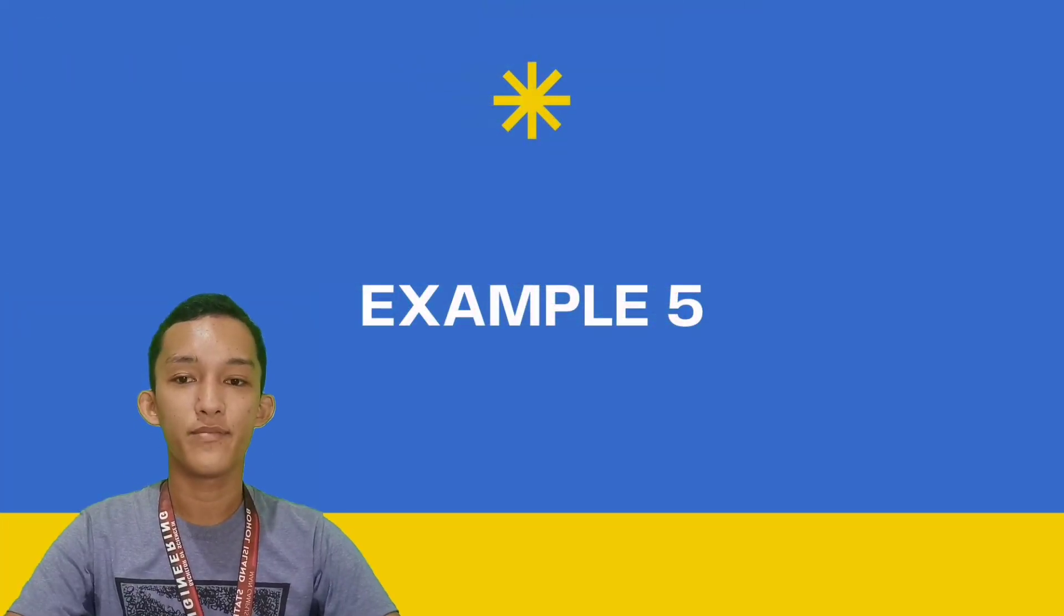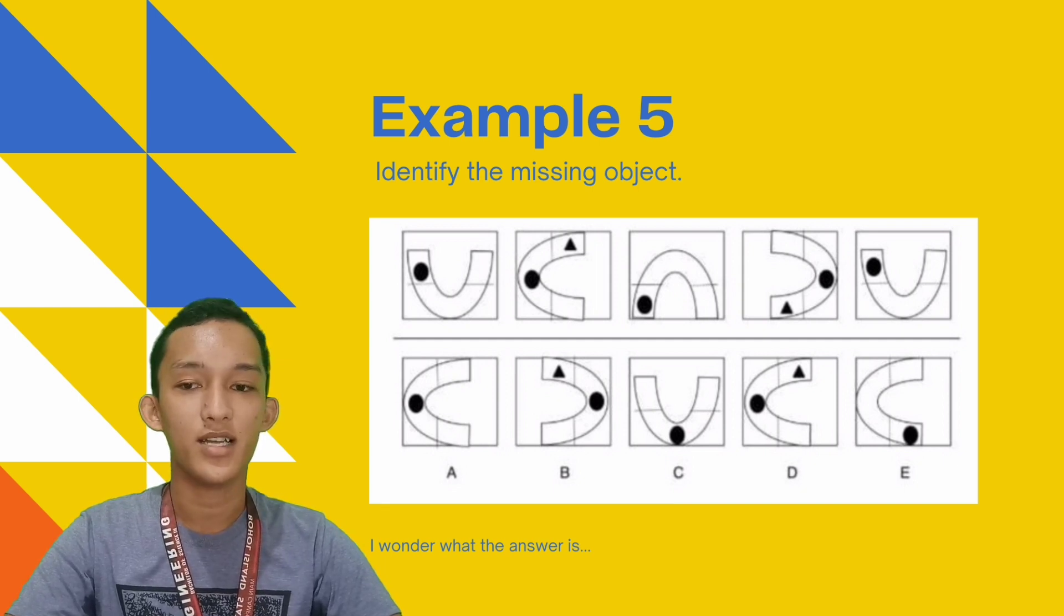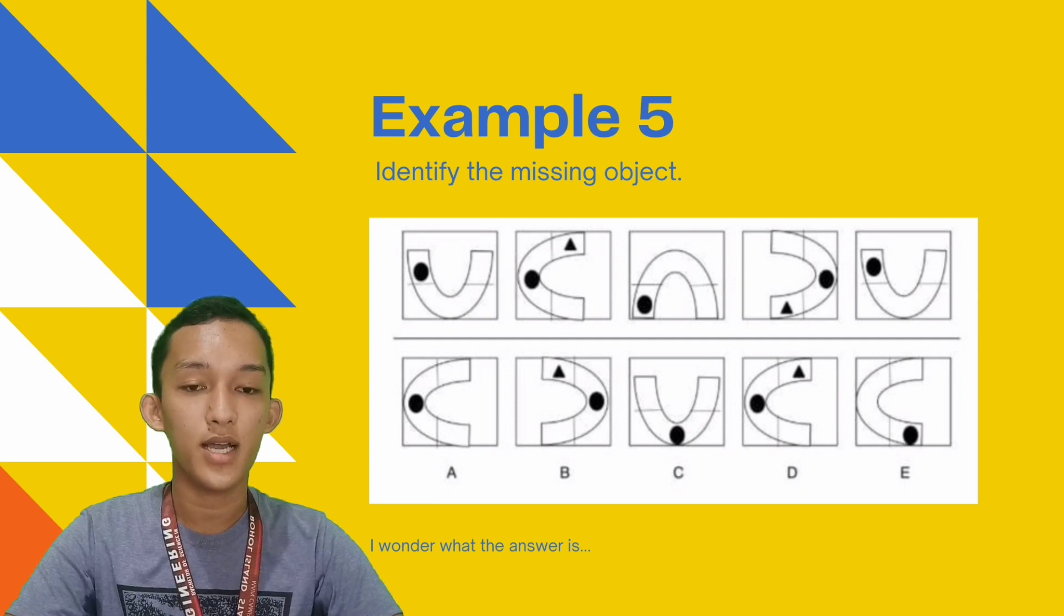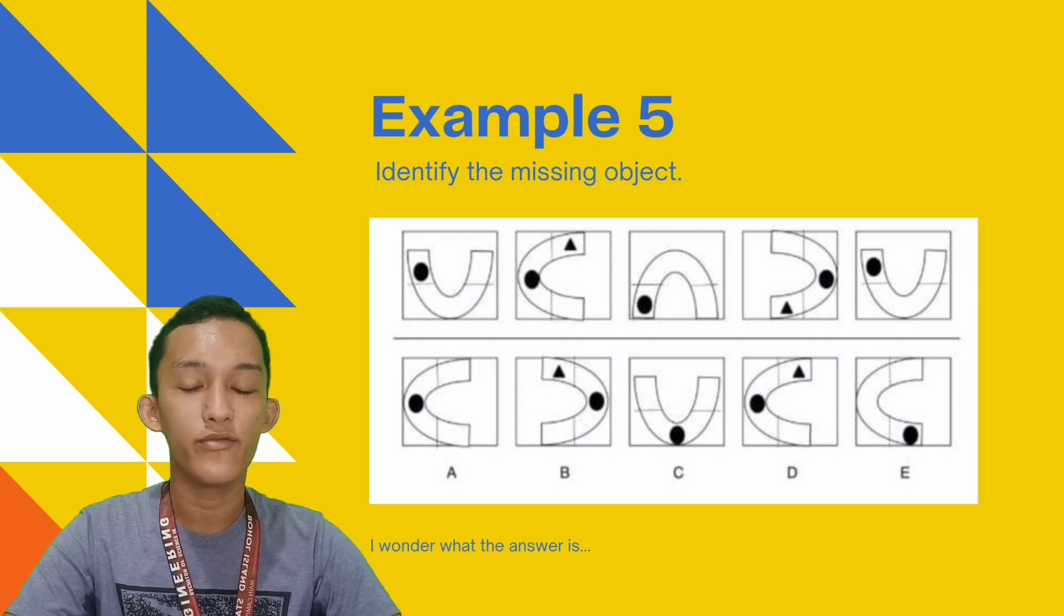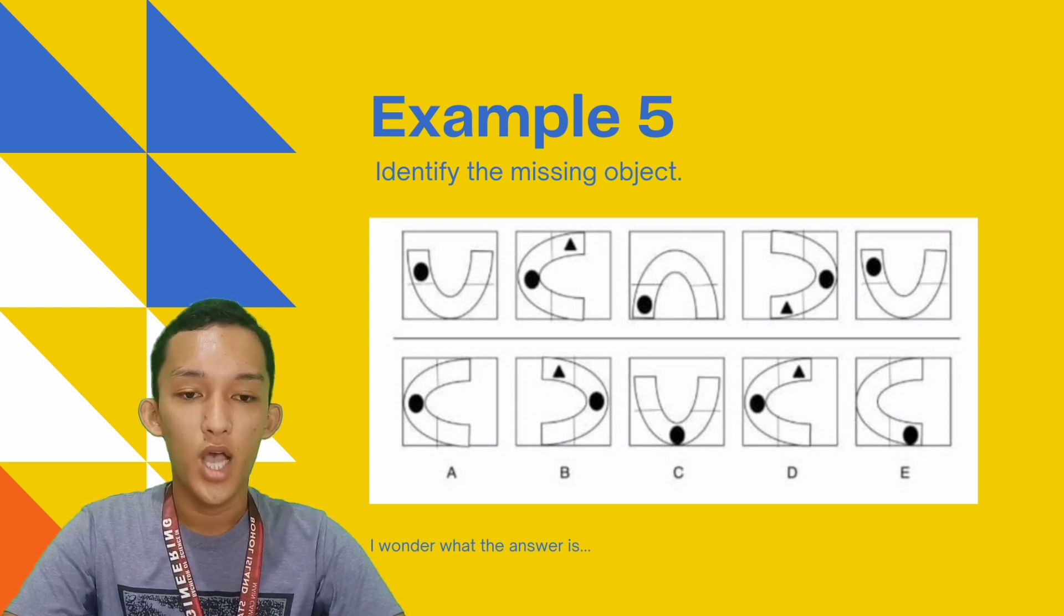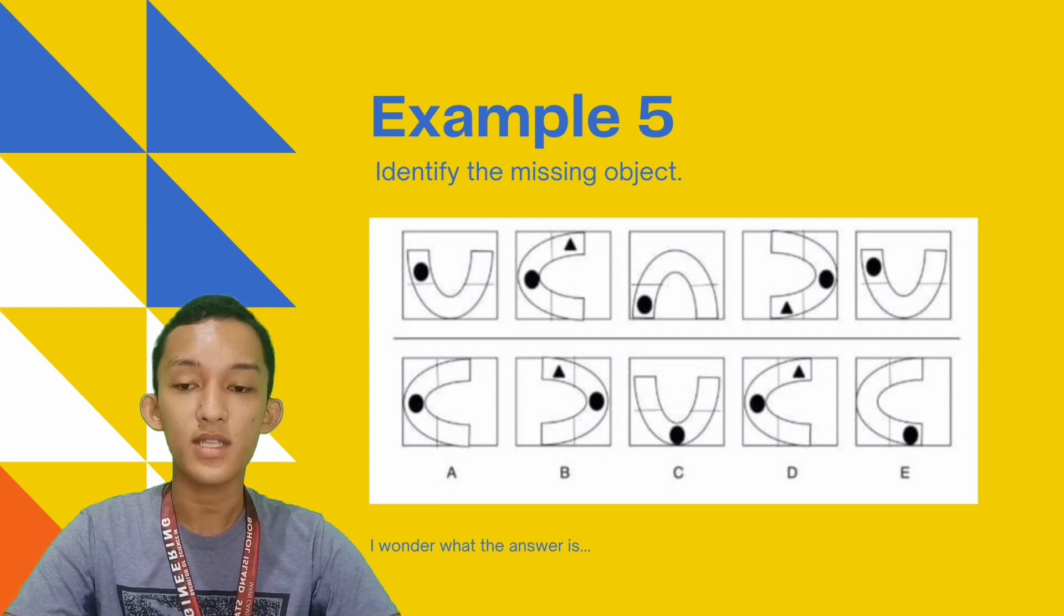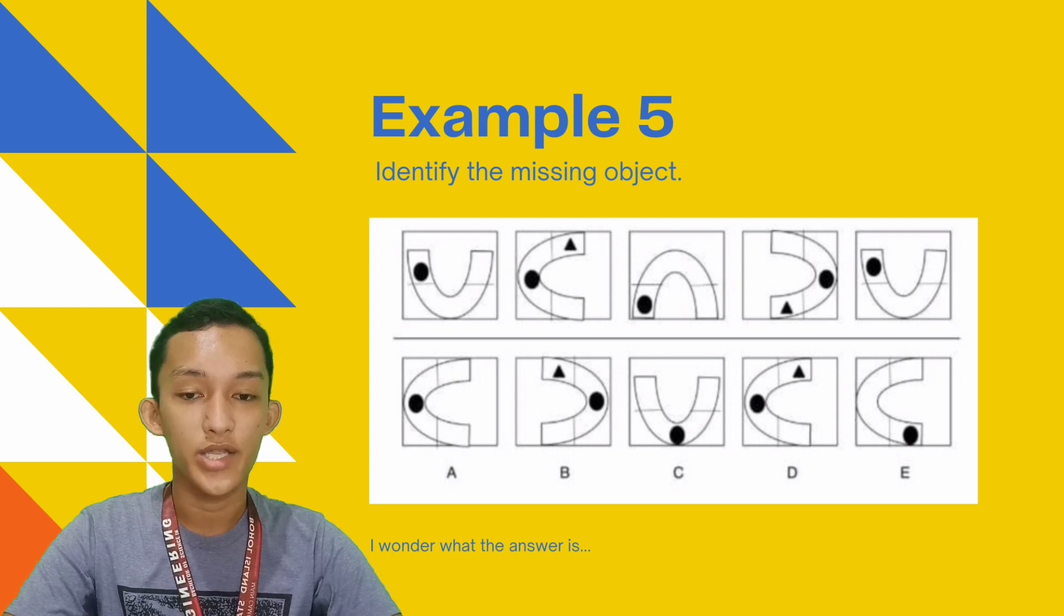Example number 5. Which box follows the sequence? In this pattern, the U shape rotates by 90 degrees with each turn. From the first figure above, the U shape opens upward. The second one opens to the right. The third one opens downward. The fourth one opens to the left. Then the last figure opens upward again. So, on the next figure, the U shape should open to the right.